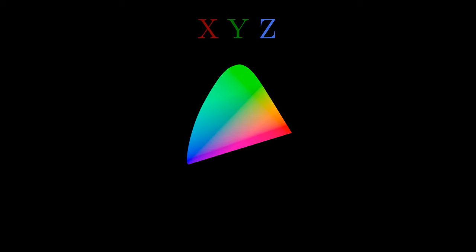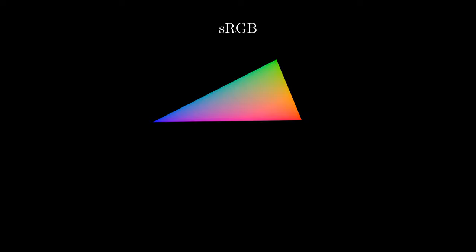While this shape represents all the visible colors, most computer monitors can only show the subset of colors inside of this triangle. And all the colors outside of this triangle are approximations. Finally, we arrive at a usable space of colors, sRGB.